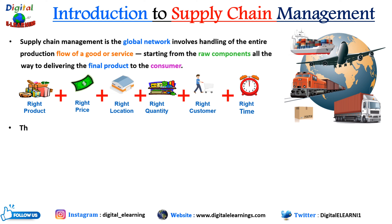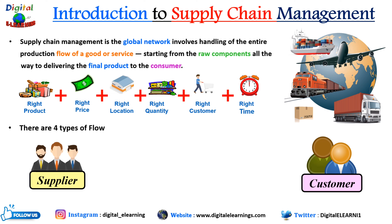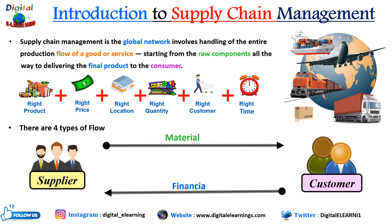There are basically four different types of flows that happen between the supplier and the consumer. First is the material flow — the flow of physical material or services from supplier to the customer. These are mostly visible in any supply chain, such as raw materials, services, components, semi-finished goods, or assemblies. The second flow is the financial flow, or the flow of cash from the customer back to the raw material supplier.